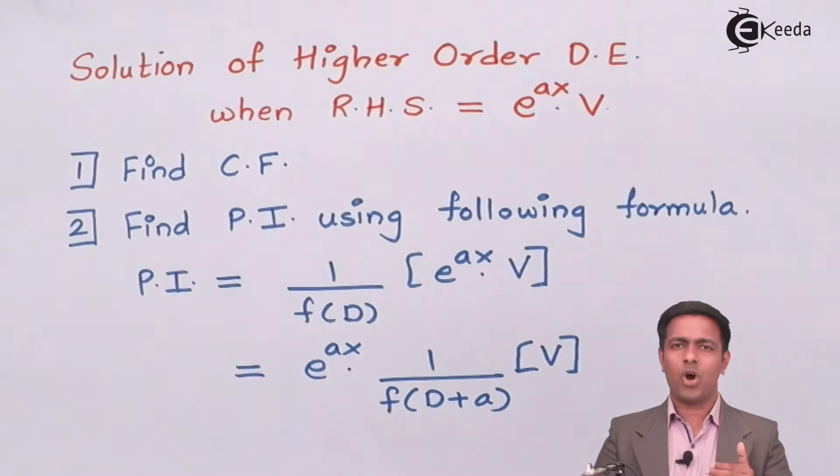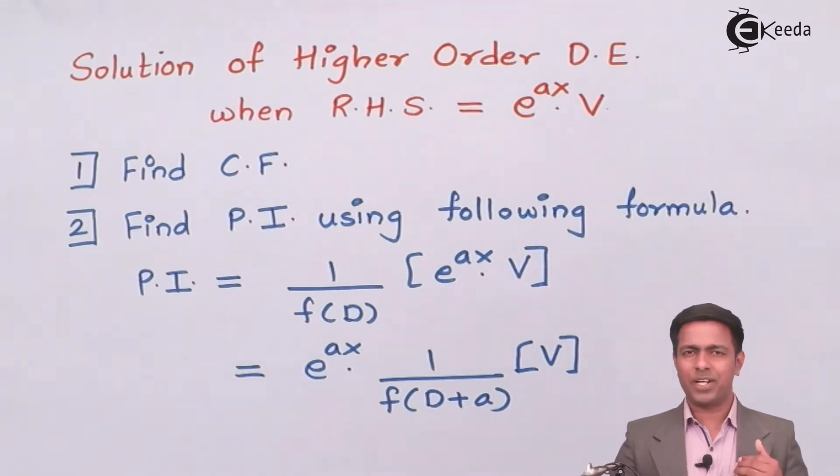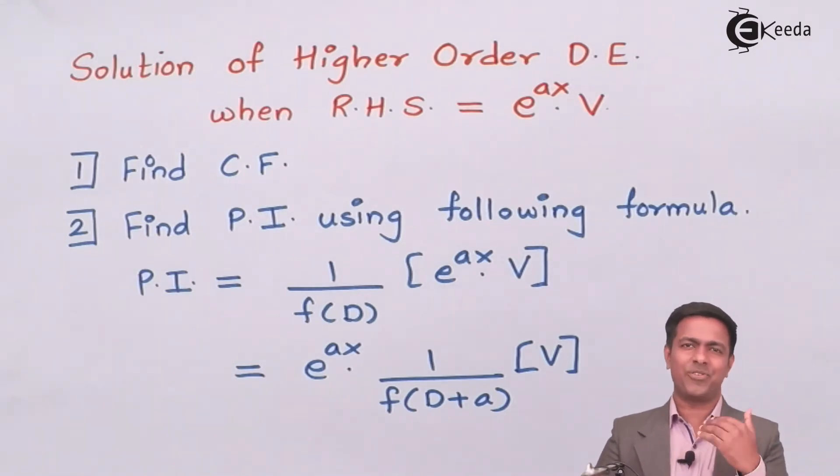Now after that, find the particular integral, which is also called as YP. To get the particular integral, whenever your right-hand side is e to the power ax into V, we have a formula. It means to find out YP or the particular integral, we have to apply this formula to get the answer.